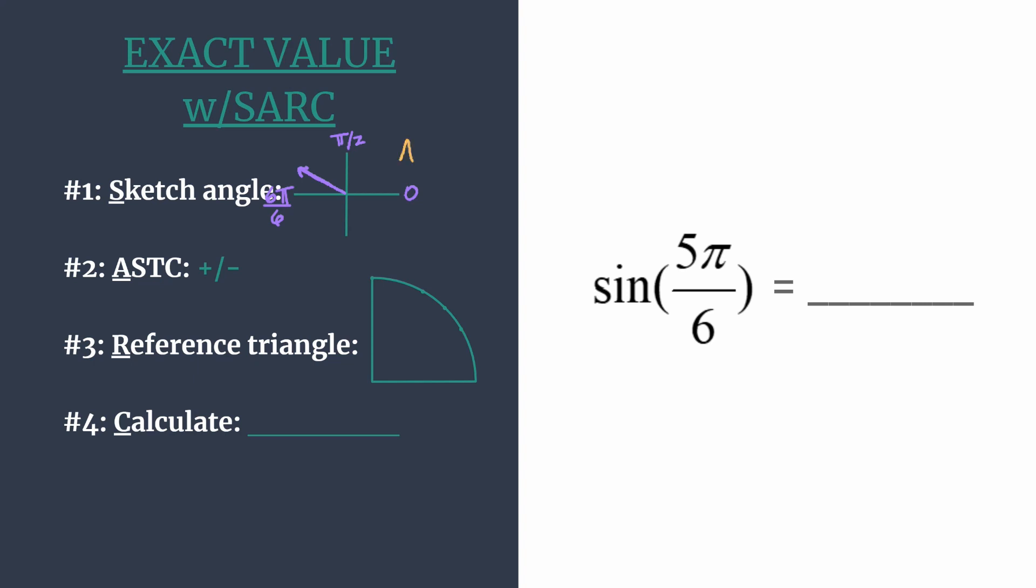So start in quadrant one, all students take classes. And these letters just tell you which trig functions are positive. So all are positive in the first.